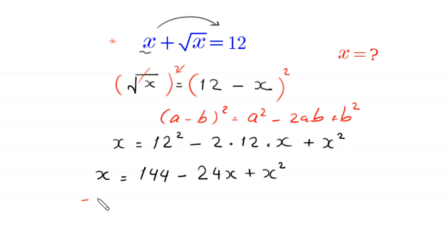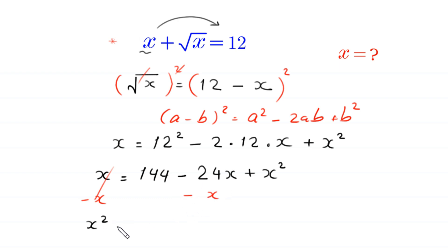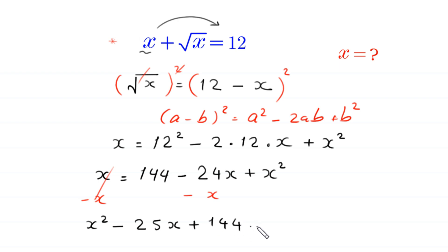Now we subtract x from both sides. This cancels, and the equation becomes x squared minus 24x minus x, which gives negative 25x, plus 144 is equal to 0.